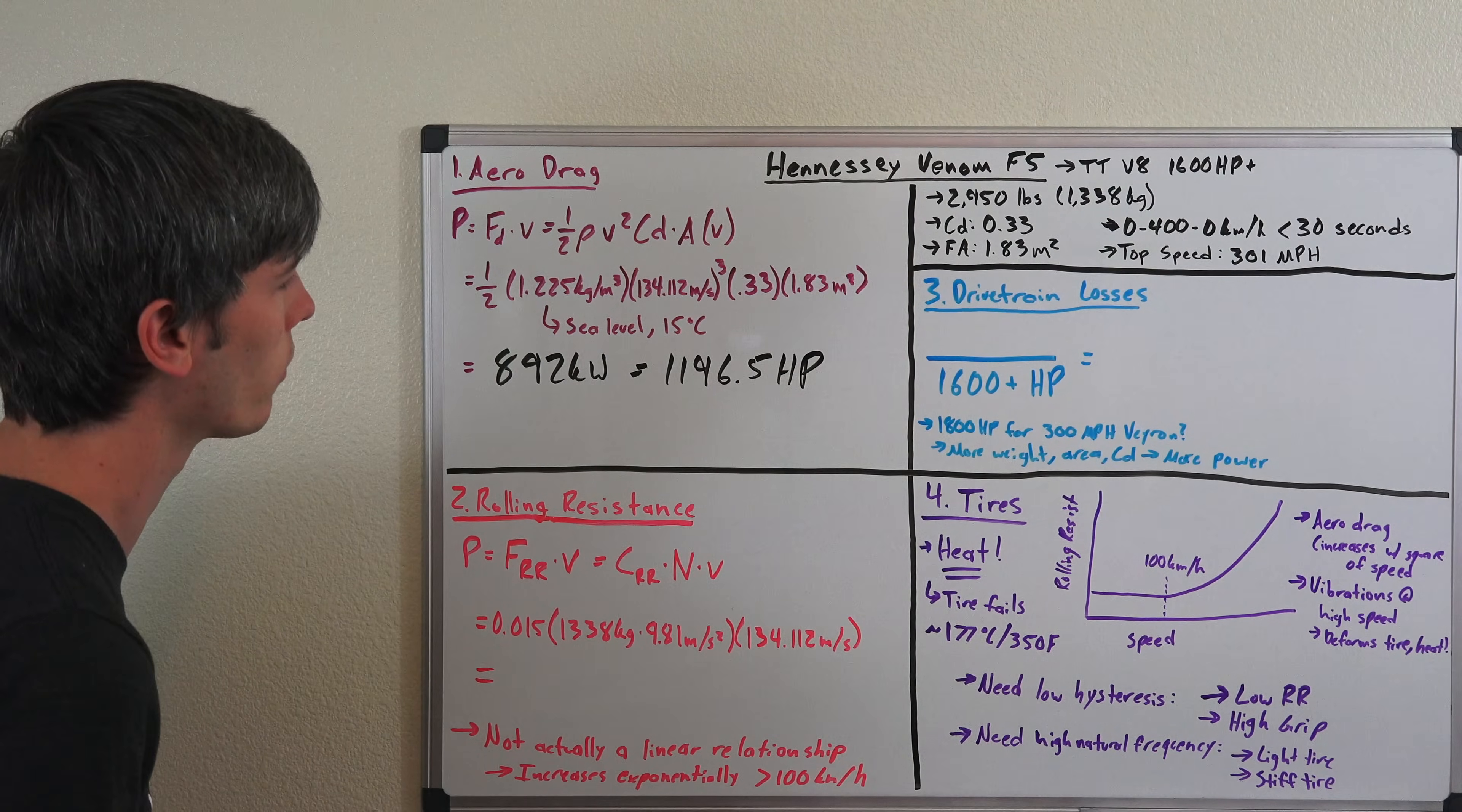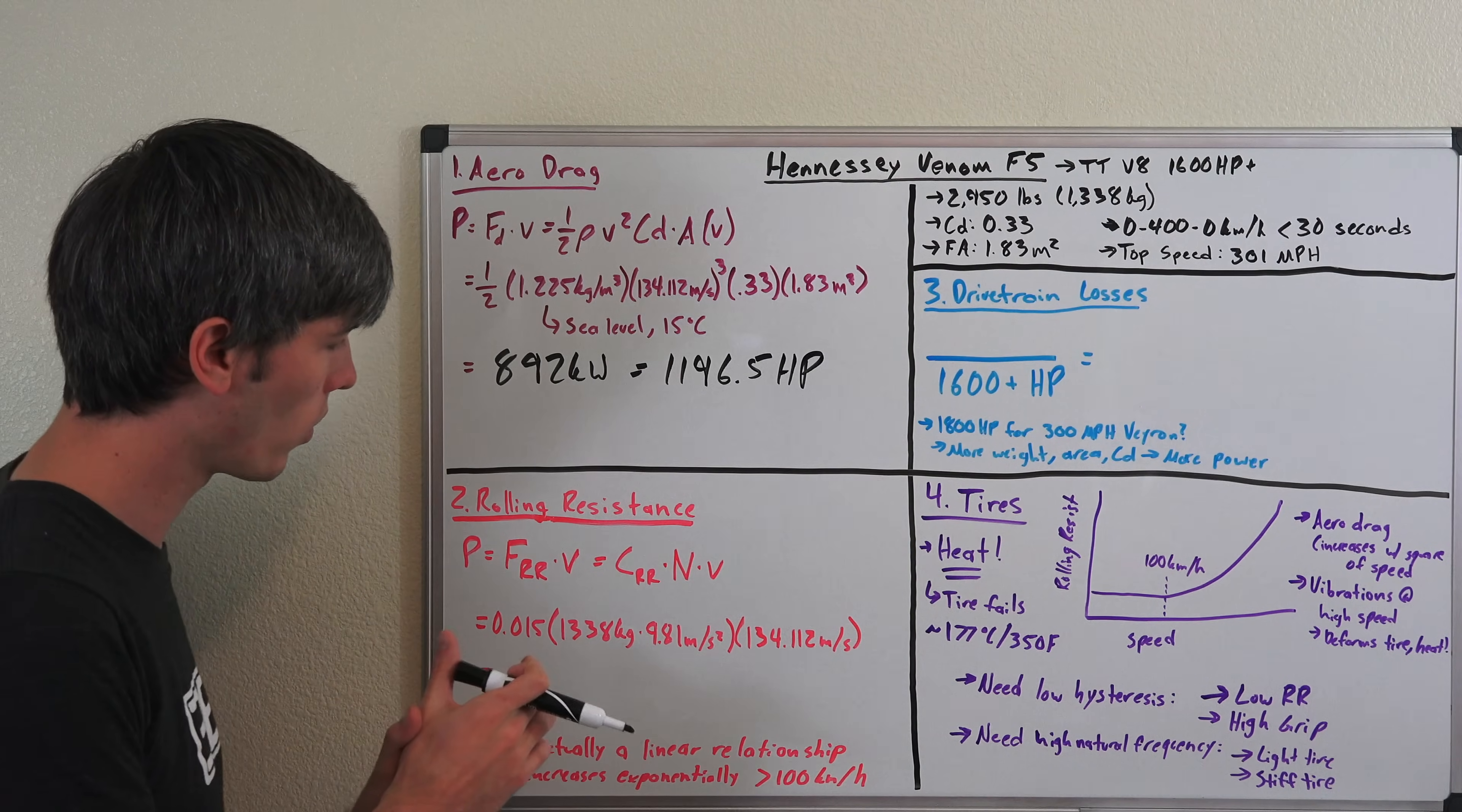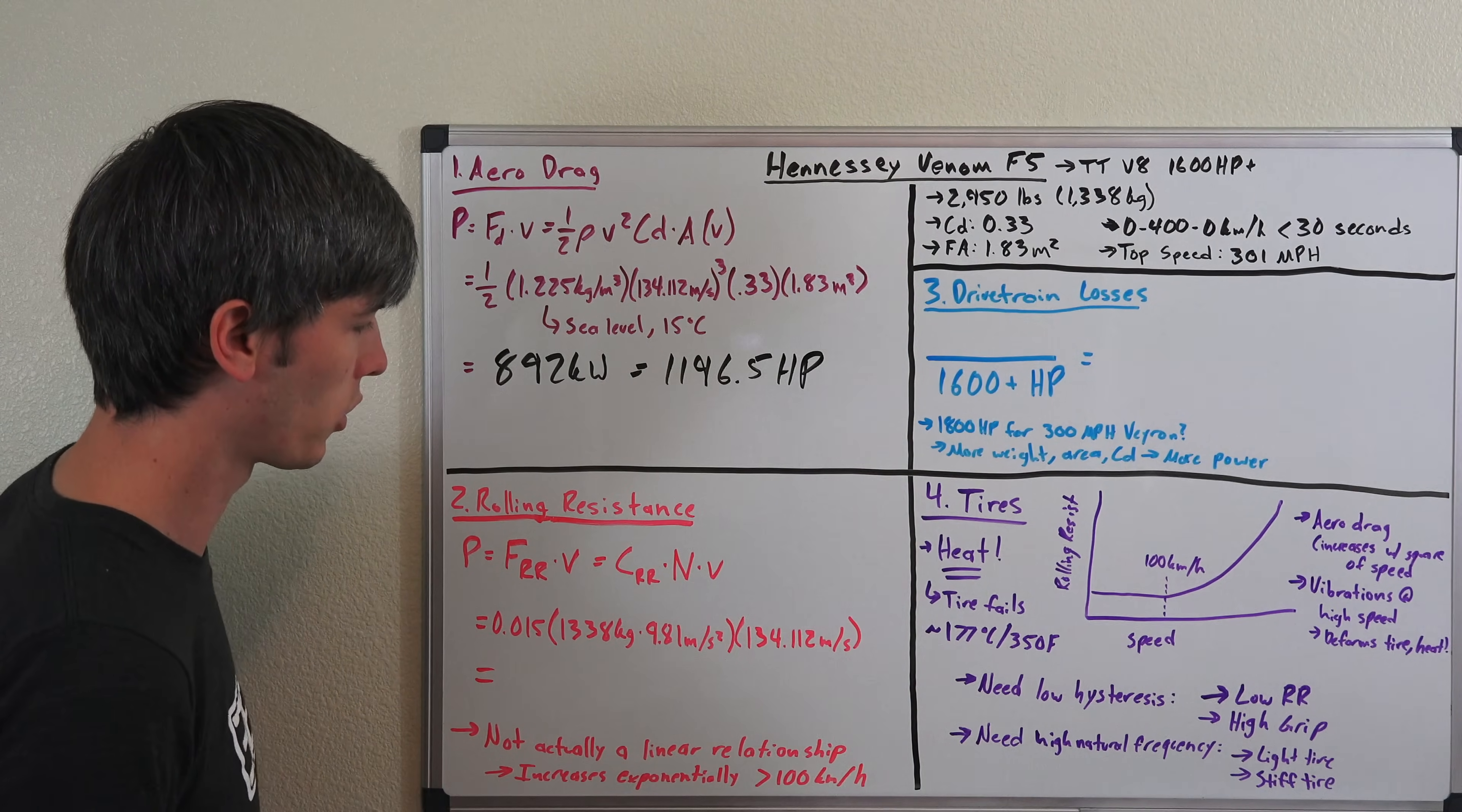That's the amount of power we need just to overcome aerodynamic drag, and we do have quite a bit left—about 400 horsepower left over after you take out aerodynamic drag. Moving on to rolling resistance, the power required for rolling resistance is equal to the force of rolling resistance multiplied by the velocity. That force of rolling resistance is equivalent to the coefficient of rolling resistance multiplied by the normal force multiplied by velocity. In our case, using a conservative 0.015 for the coefficient of rolling resistance, multiplying that by the mass of the car 1,338 kilograms, multiplied by gravity 9.81 meters per second (this combined is our normal force), and then multiplying that by velocity 134 meters per second or 300 miles per hour.